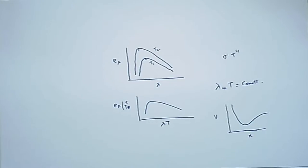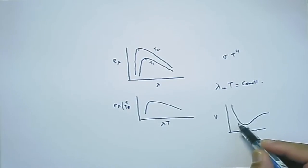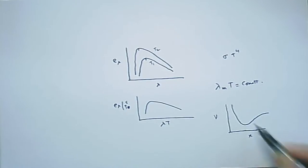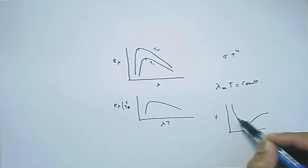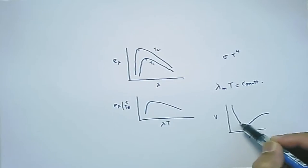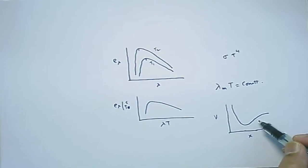If you plot the potential energy diagram as a function of inter-atomic spacing, this particular curve is really not harmonic. It is much more complex and depends on the inter-atomic forces. Applying pressure might change the mean value of x, but the shape of the curve is essentially determined by the repulsive and attractive forces responsible for forming the bond.